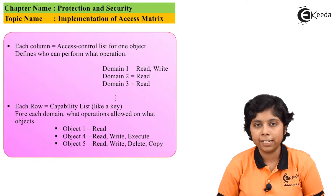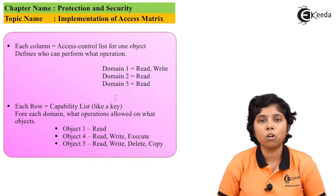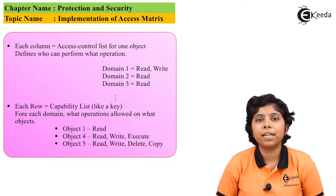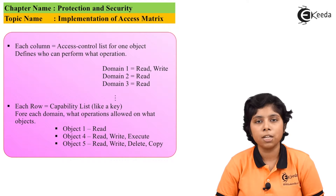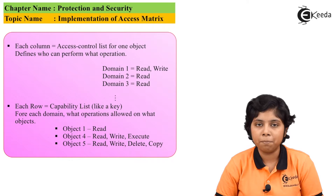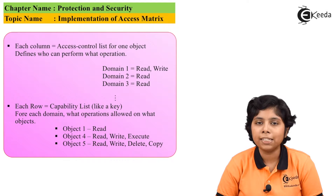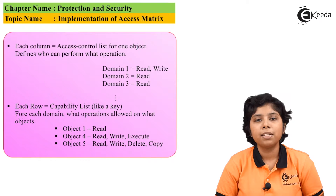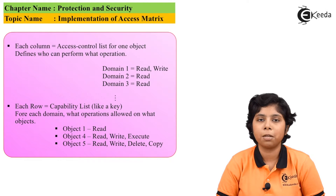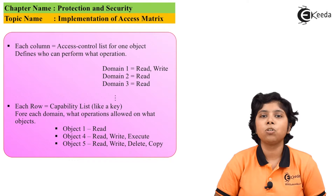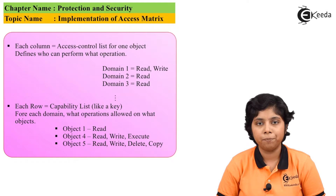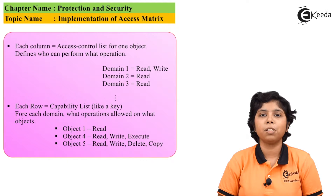We need alternative implementation techniques for the access matrix. The first is the global table: a simple table consisting of triples — the object name, the domain name, and the access rights. If an operation 'm' is to be performed on object 'Oj' inside domain 'Di', it belongs to the triple (Oj, Di, Rk) where m belongs to Rk. If this triple is found in the global table, access is allowed; otherwise it is denied.